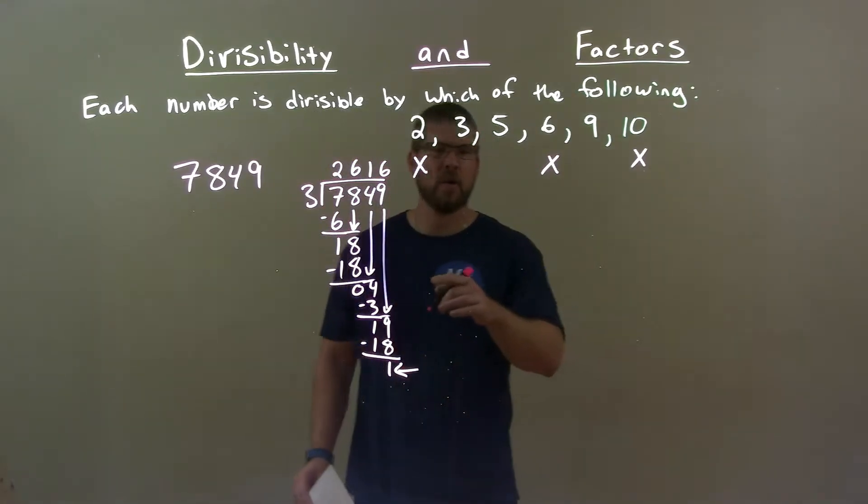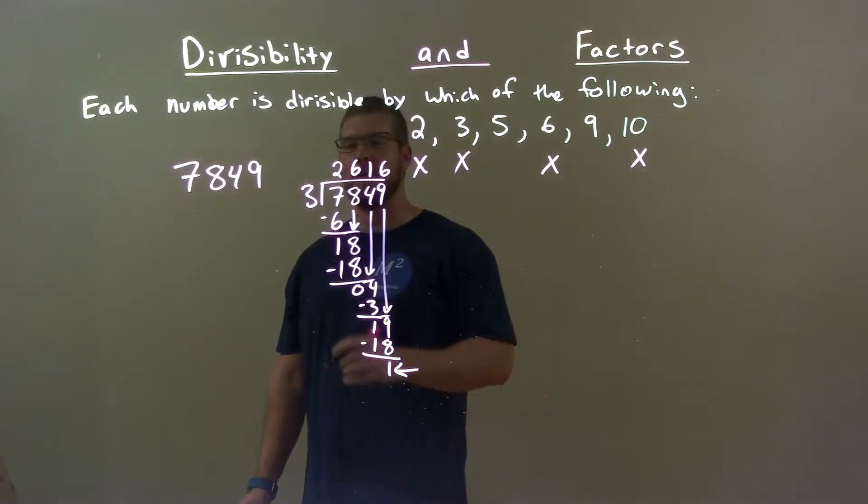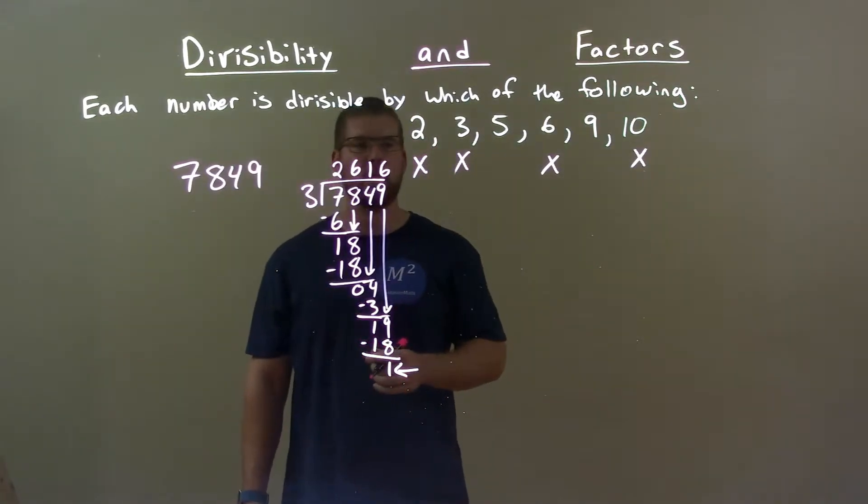Since we have a remainder of 1, 3 does not go in evenly into 7,849.